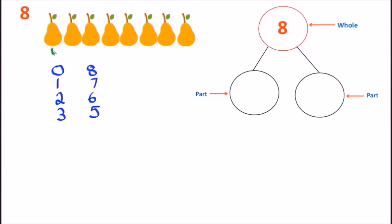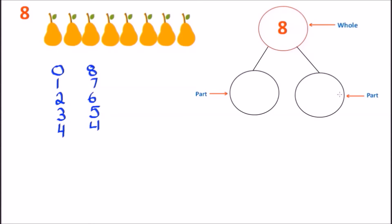And you can see so far we have four different ways to get to the number 8. Let's keep going: 1, 2, 3, 4. We have 4, so let's put down the number 4. Now how many are remaining? 1, 2, 3, and 4. So our next number bond is a 4 and a 4, which brings us the whole of 8. Four and four gives us the whole of 8. So we now have five number bonds.